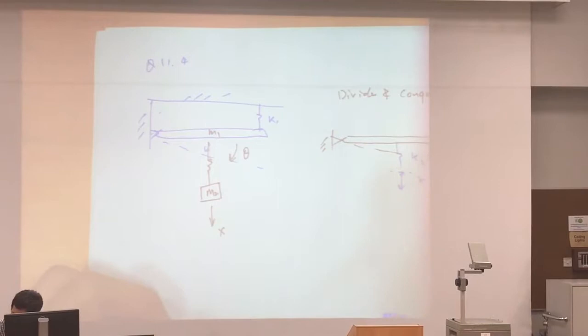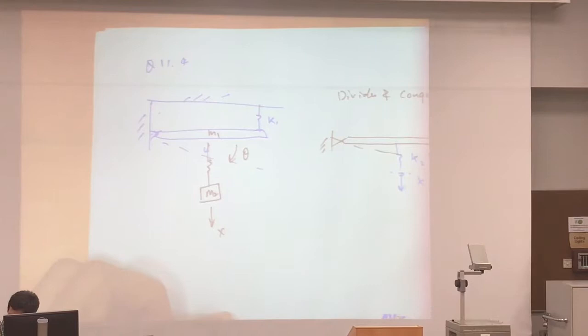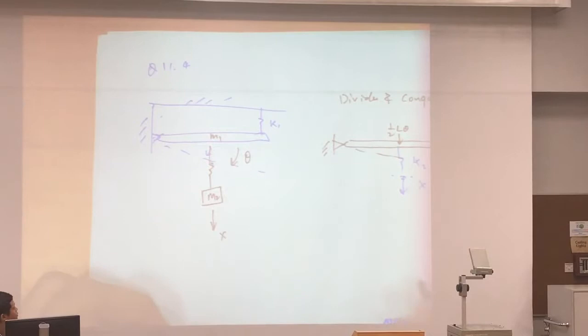If you now make a turn theta, so this motion is L theta at the tip. The midspan will move half L theta.